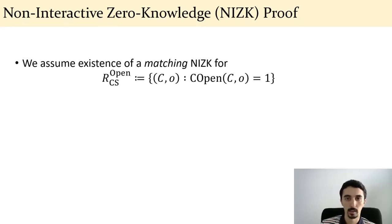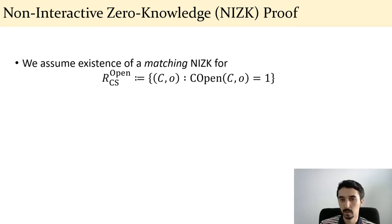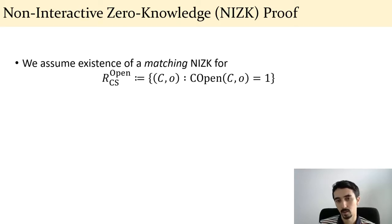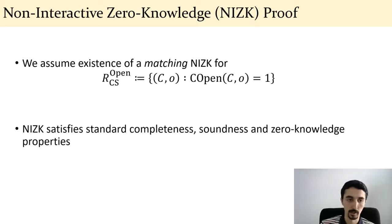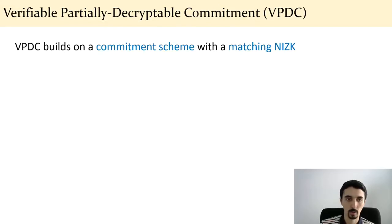We assume the existence of a matching NIZK for the standard commitment opening relation, which states that the prover knows an opening O for a public commitment C such that the open function on (C, O) returns true. This NIZK satisfies the standard properties of completeness, soundness, and zero-knowledge.